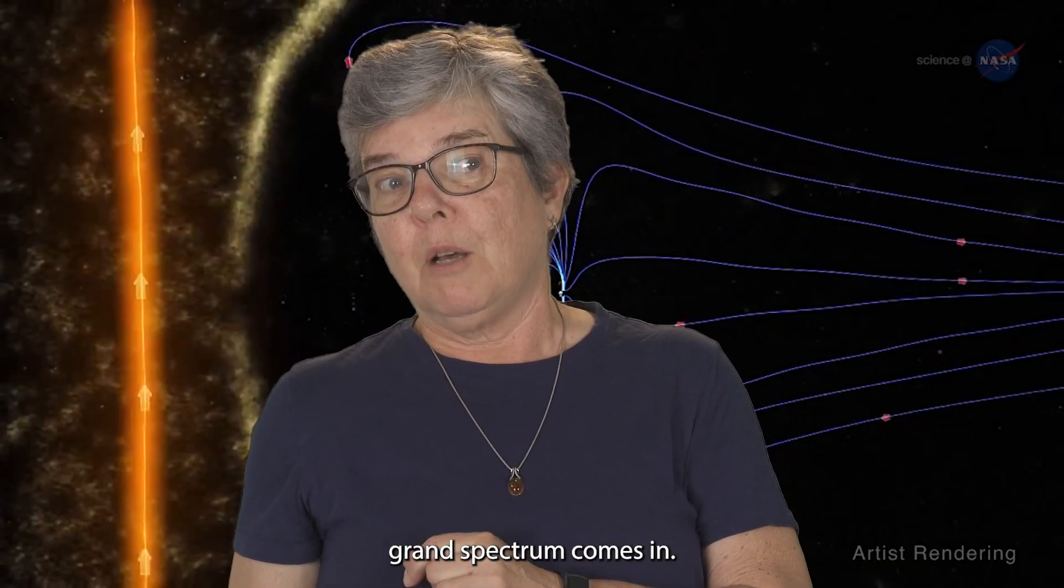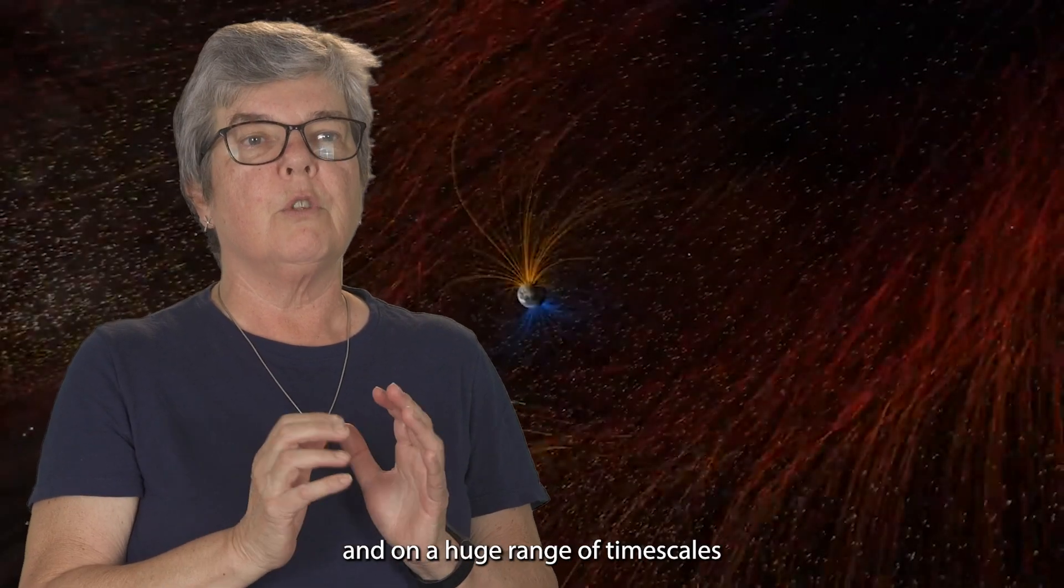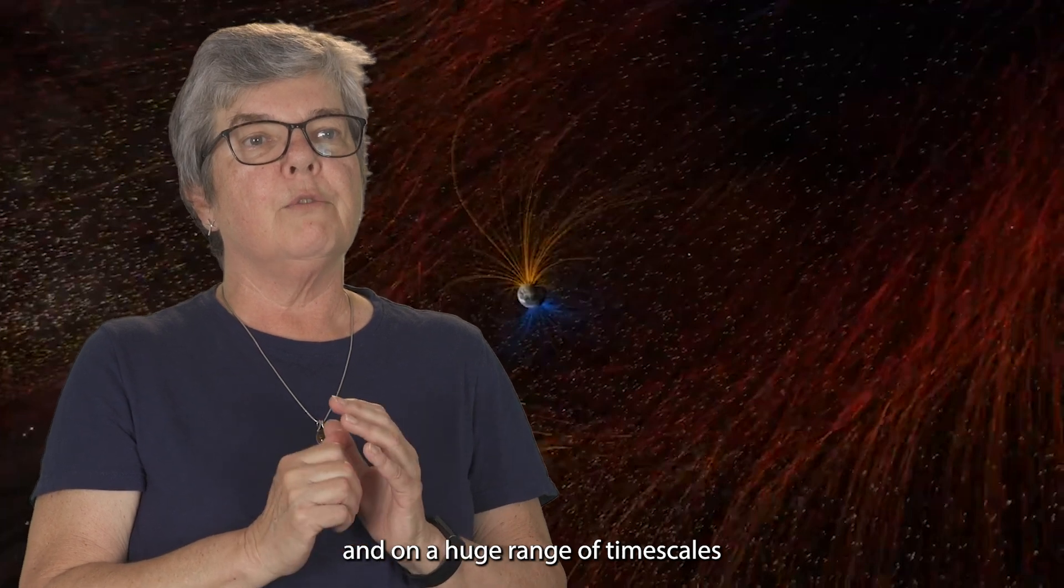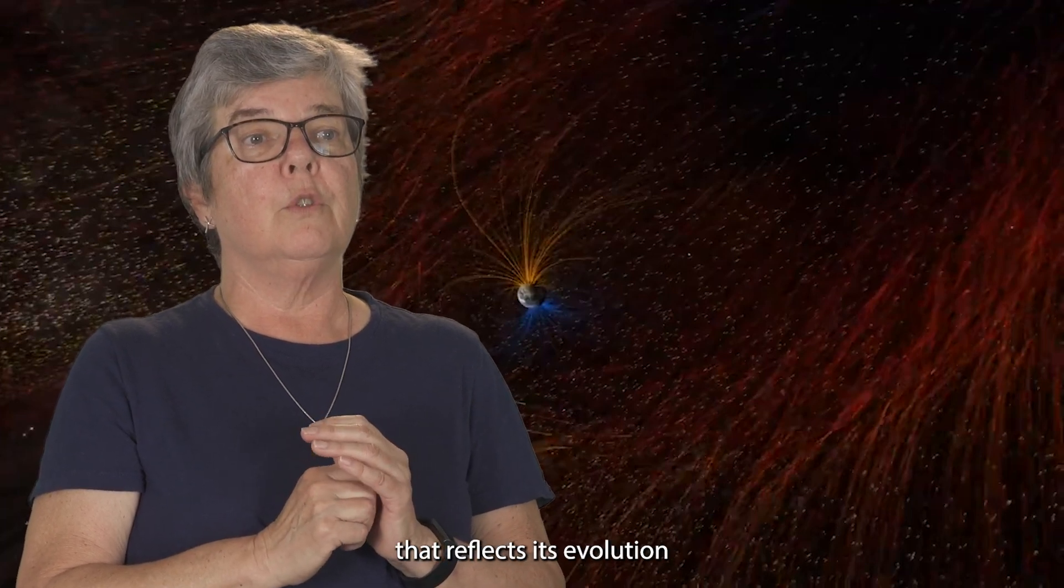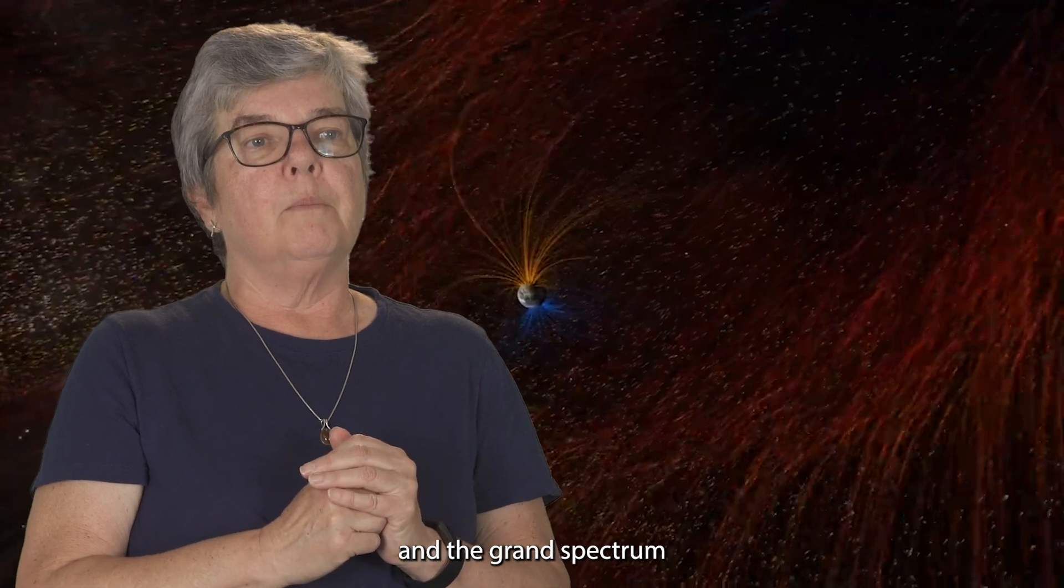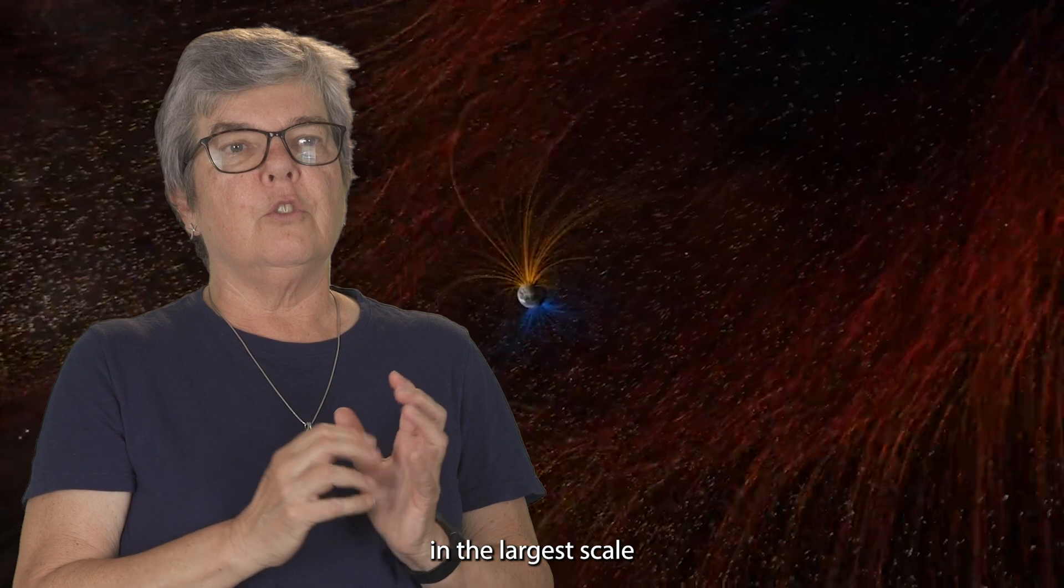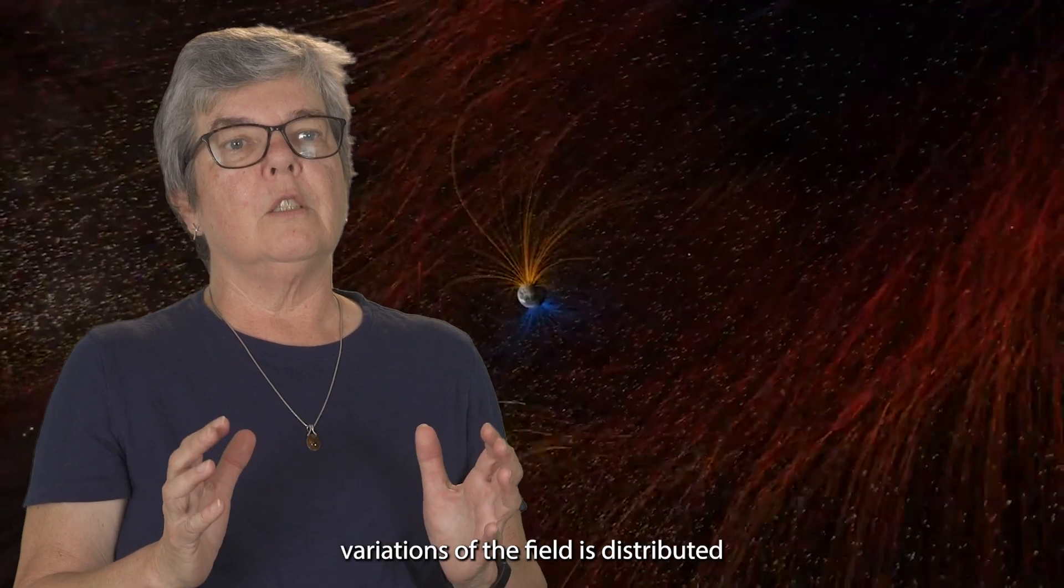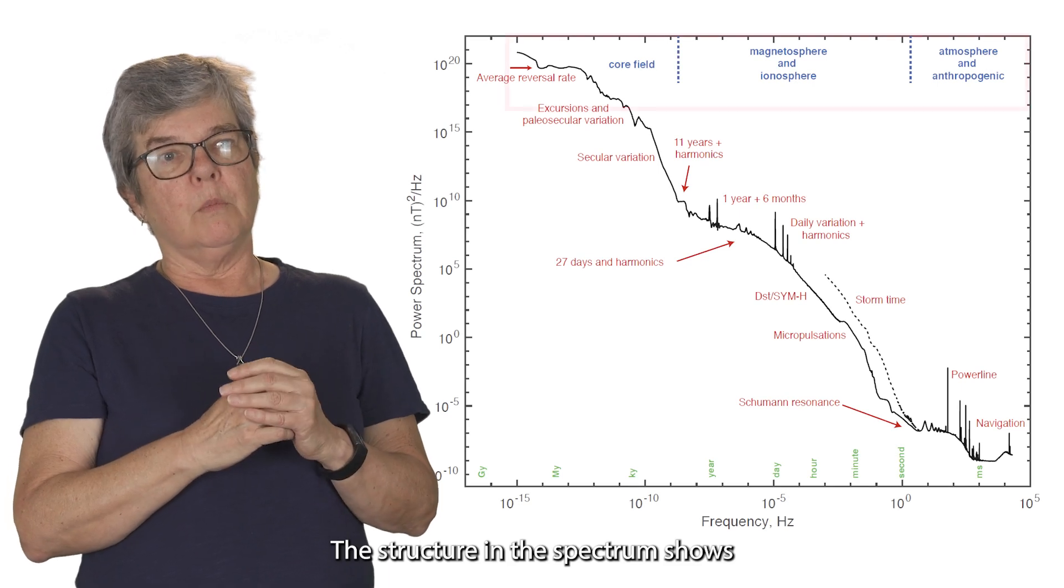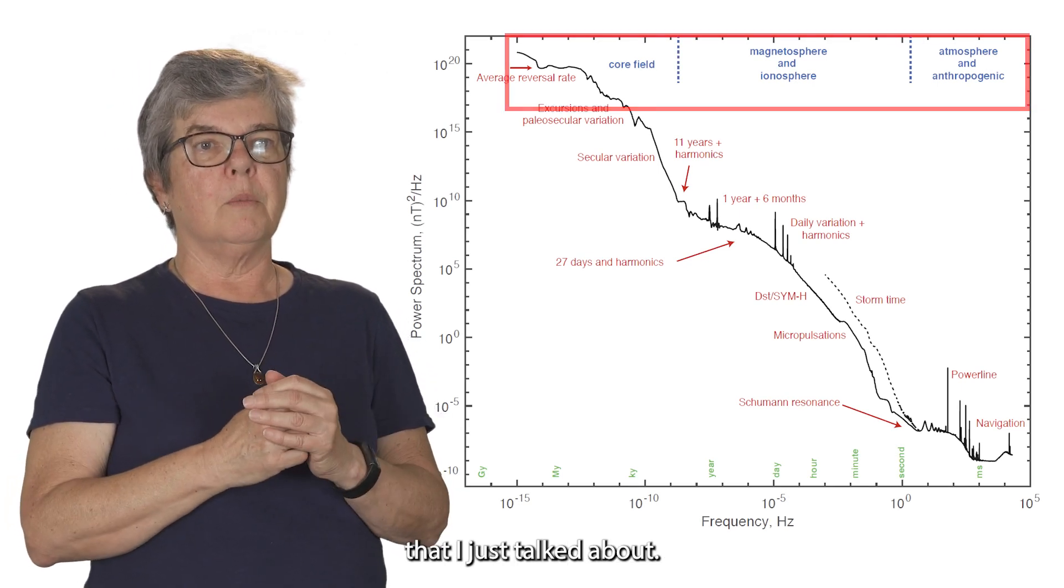And that's where the ground spectrum comes in. So the magnetic field varies geographically and on a huge range of timescales that reflects its evolution over Earth's history. And the ground spectrum is a way of looking at how the energy in the largest scale variations of the field is distributed according to frequency.